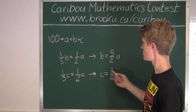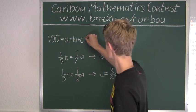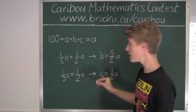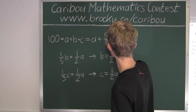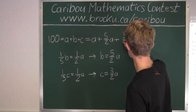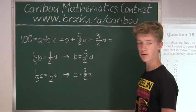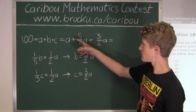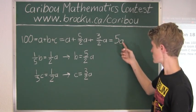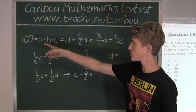Now we have both B and C in terms of A. Let's substitute back into our first equation: A + (5/2)A + (3/2)A = 100. Now 5/2 plus 3/2 equals 8/2, which equals 4. So 4A + 1A = 5A. We have 100 = 5A, and dividing both sides by 5 gives us A = 100 ÷ 5 = 20.